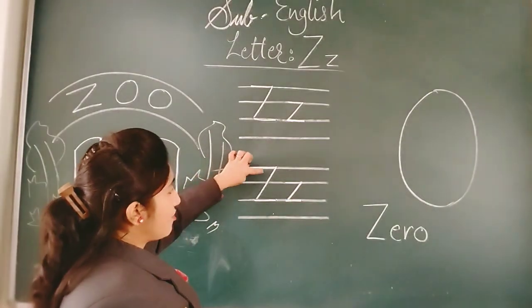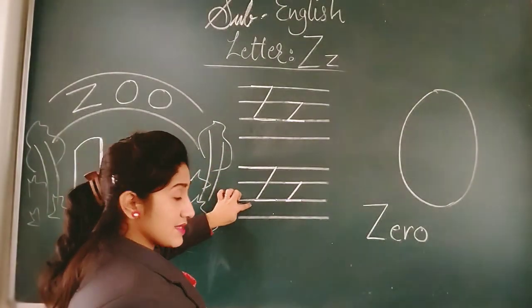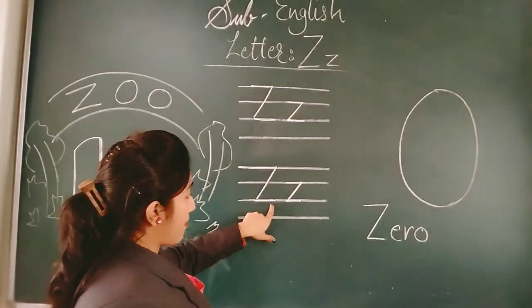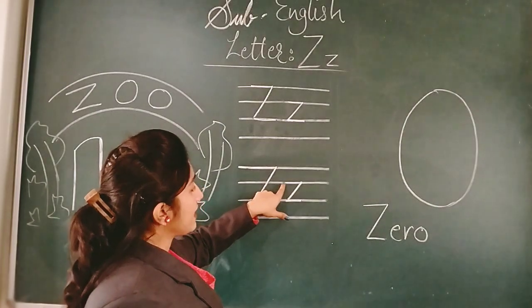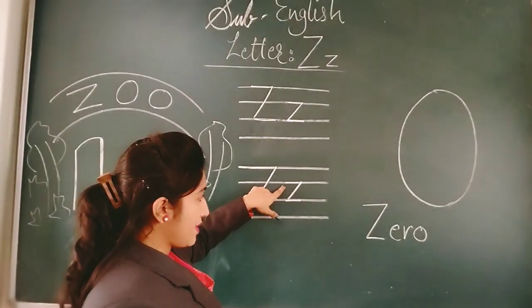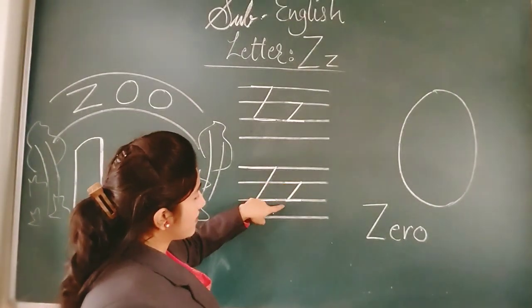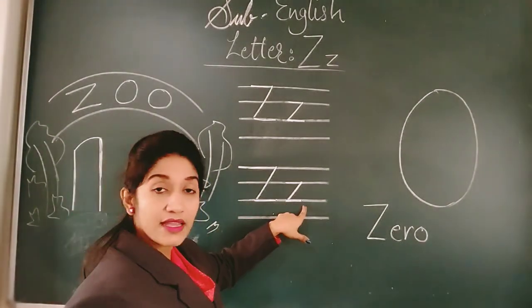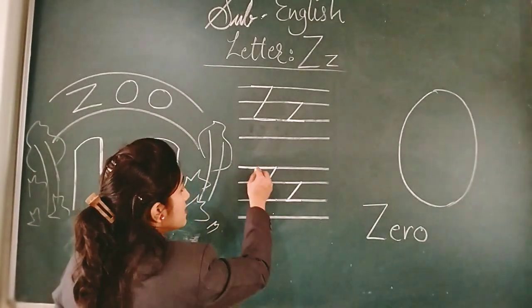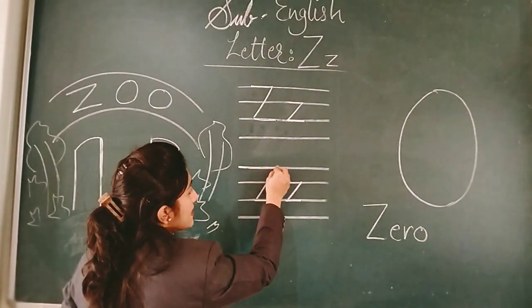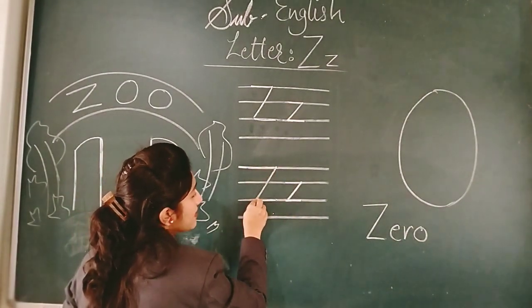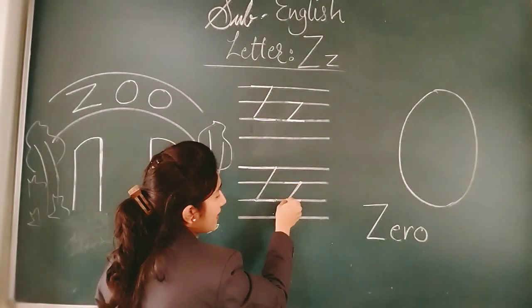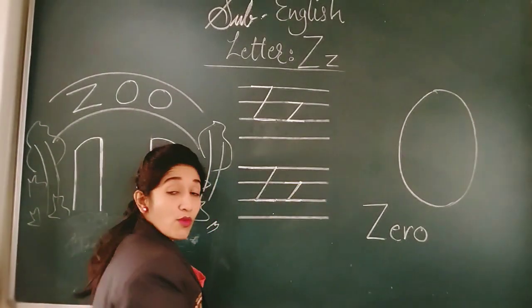First line mein sleeping line, phir first to third line tak backward slanting line, phir again third line mein sleeping line — this is capital Z. Small Z ke liye ham second line mein eek sleeping line, phir second to third line tak backward slanting line, phir third line mein sleeping line — so this is small Z. Sleeping line, slanting line, sleeping line — capital Z. Sleeping line, slanting line, sleeping line — that is small Z.